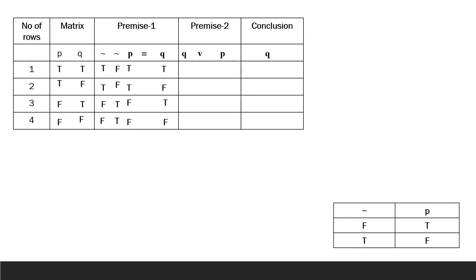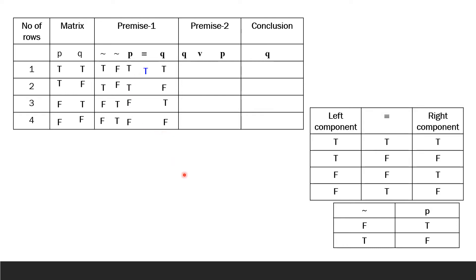Triple bar is true when both components have equal values. If both are true, then it will be true. Unequal values, then false. Unequal values, then false. If both are false, then it is true. This gives us the values for the main connective in the first premise.